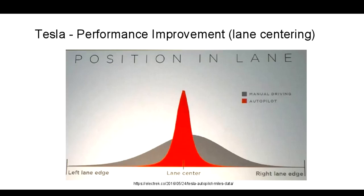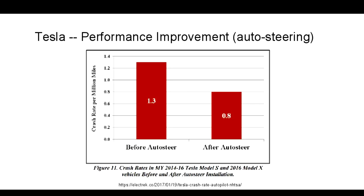More impressive is this chart from the very recently released accident analysis report in the wake of a crash of a Tesla that many of you have heard about. This data collected by Tesla shows that when auto steering is engaged as part of the overall autopilot functionality, the crash rate per million miles is reduced by 40%. That's a remarkable achievement.